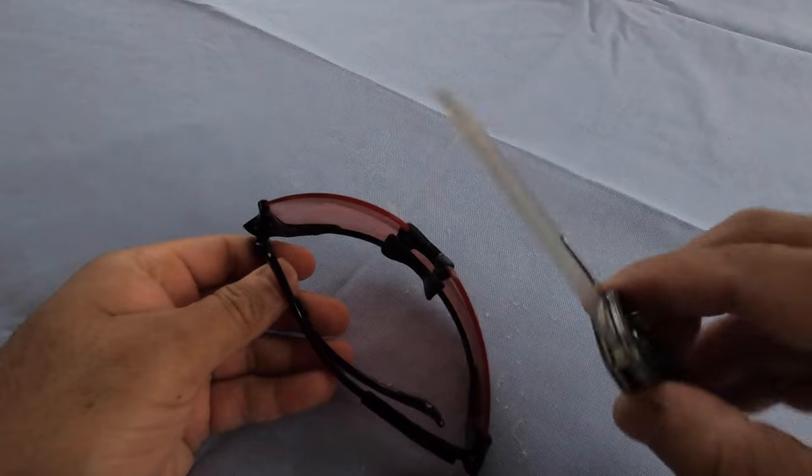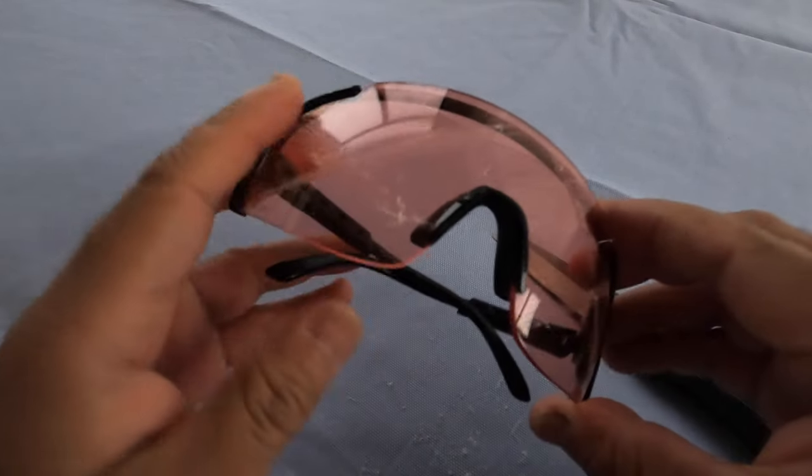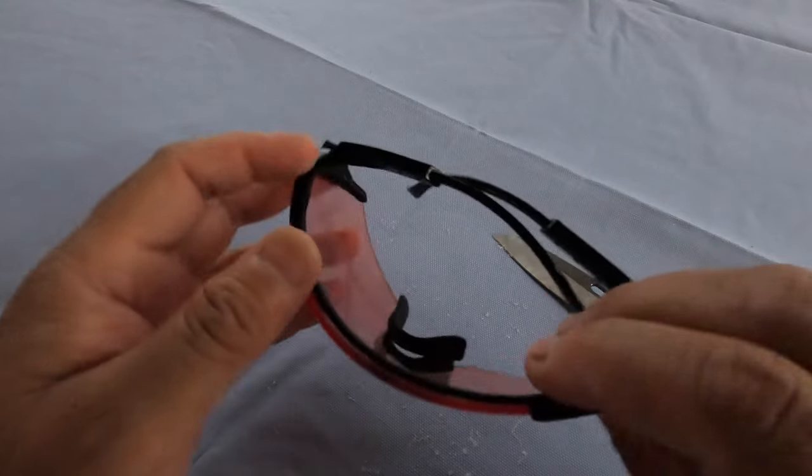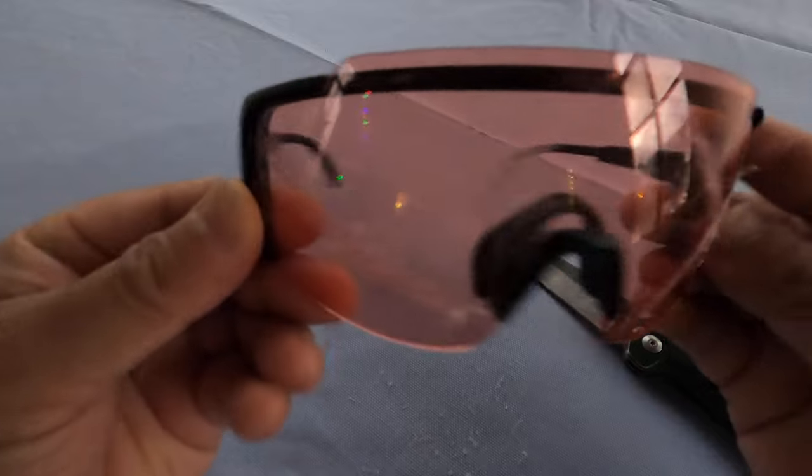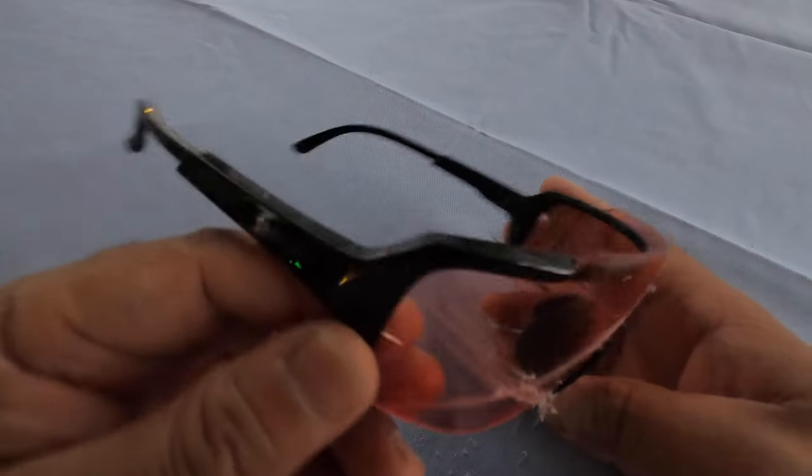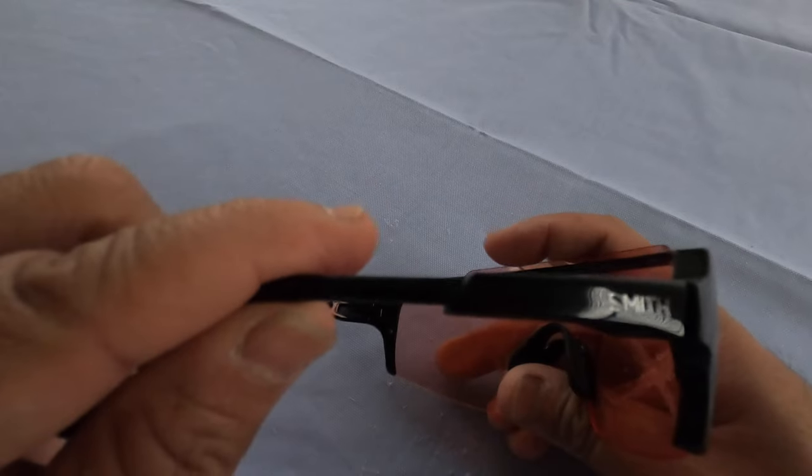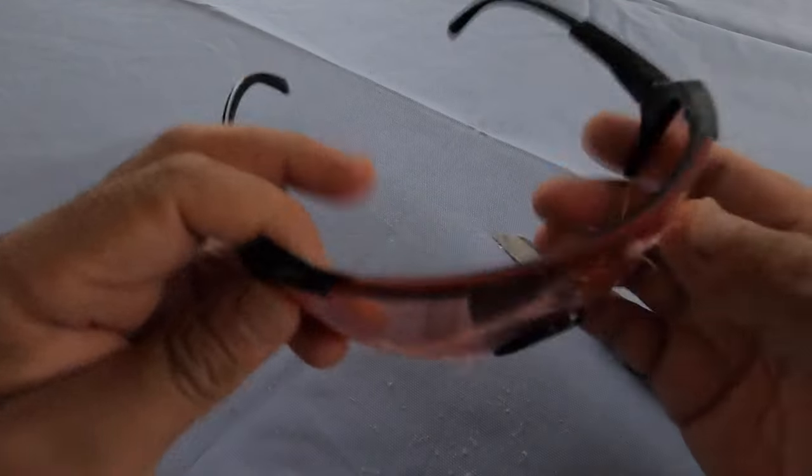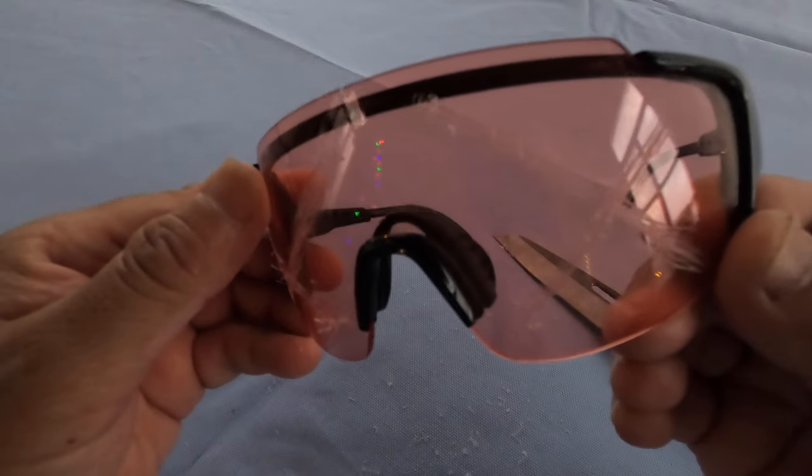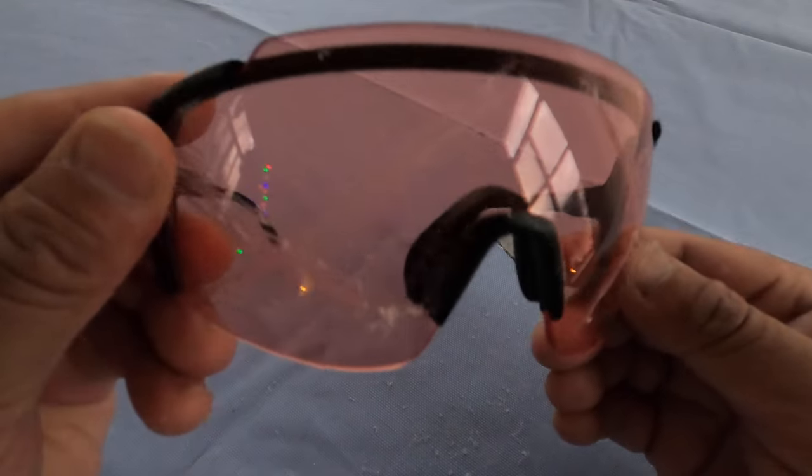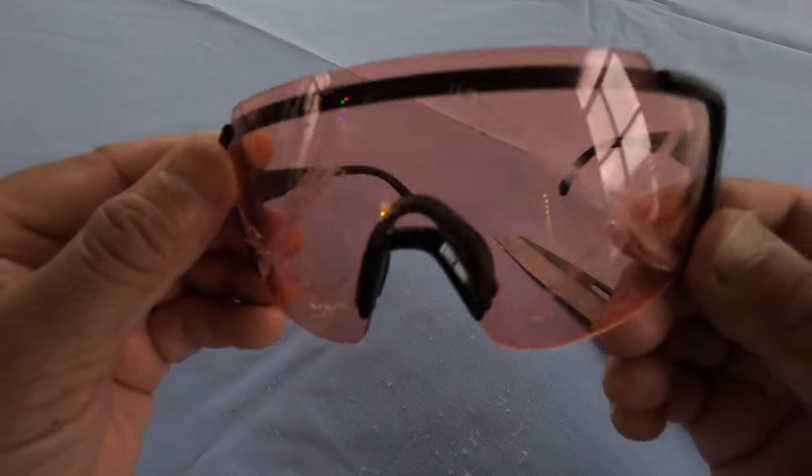And a waste of my time as well because Smith Optics could just be like hey just keep the glasses or send them back we'll send you a new pair, but instead they just want you to destroy them. I don't know why. I guess that could be maybe their insurance policy or something that you have to destroy them.